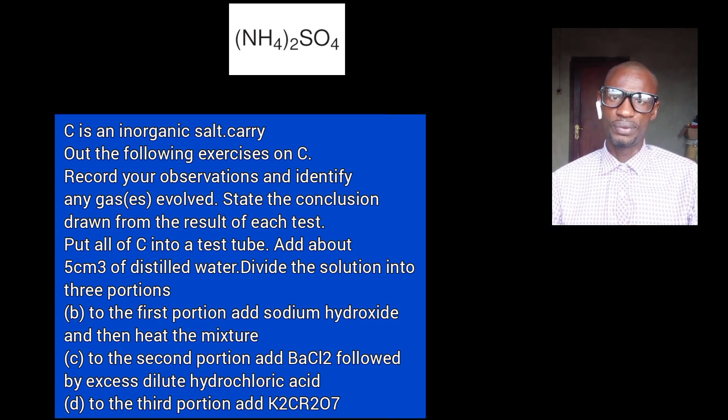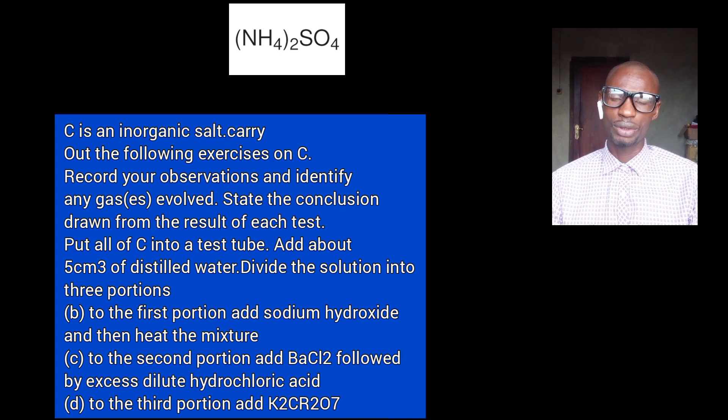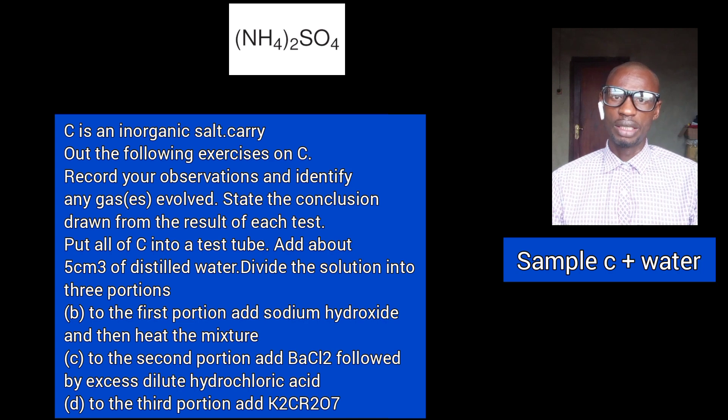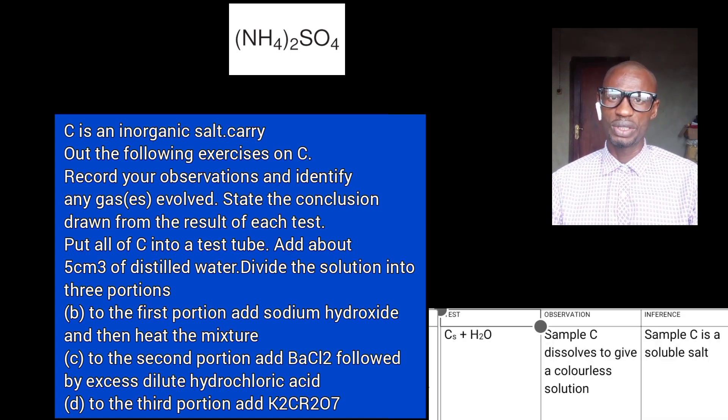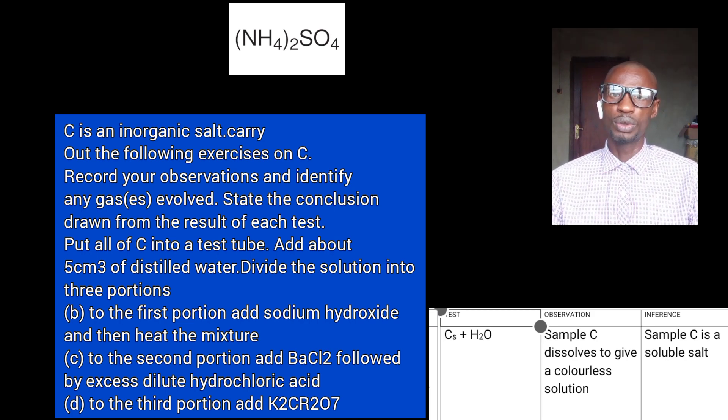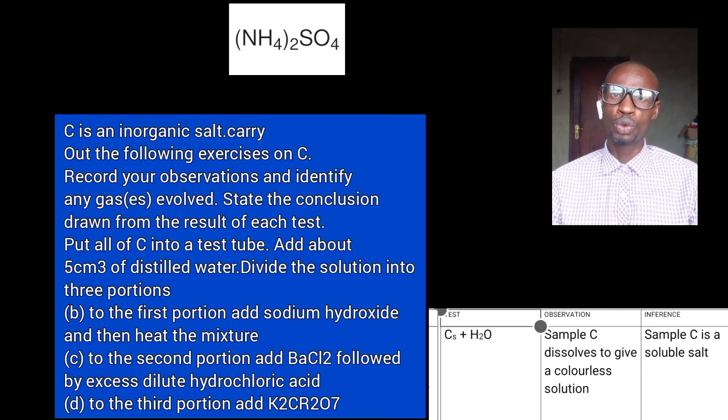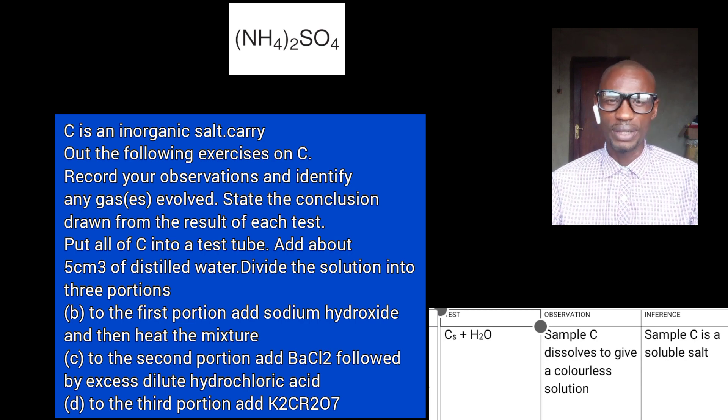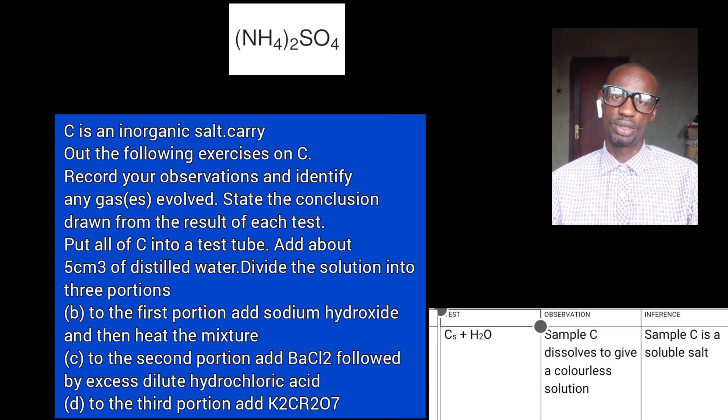Test, observation, inference. According to the question, we are asked to add water to sample C. Now from the theory of practical, C is a soluble salt. So when you add water, what you are expected to write in your observation is that the C dissolves completely to give a colourless solution. If it is another salt that is a coloured salt, you must give the colour of the salt when it dissolves in water. But this one will give a colourless solution. You have one mark for that. And at your inference, C is a soluble salt.